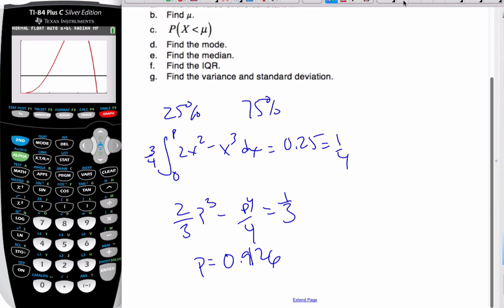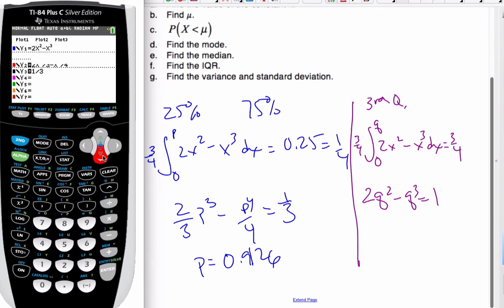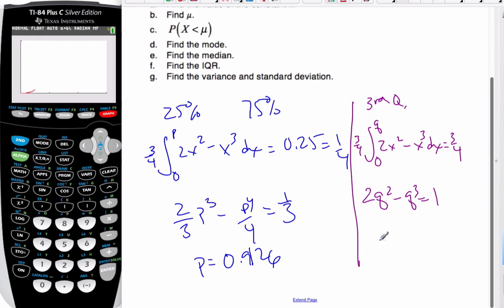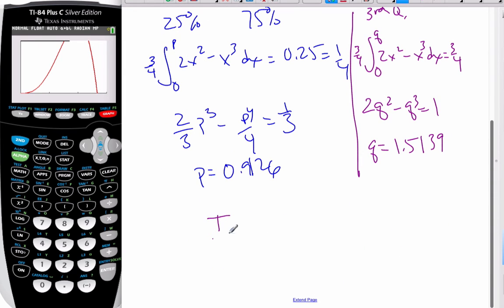I do a similar thing for the third quartile or the upper quartile except it's going to be this part is going to be 3 quarters and so again I'm going to go from 0 to q of 3 quarters 2x squared minus x cubed dx is equal to 3 quarters again divide by 3 quarters divided by 3 quarters that equals 1 unplug in my q so 2q squared minus q cubed is equal to 1 and again we change this to 1 graph it find the intersection and again I've already solved this and so q will end up being 1.5139